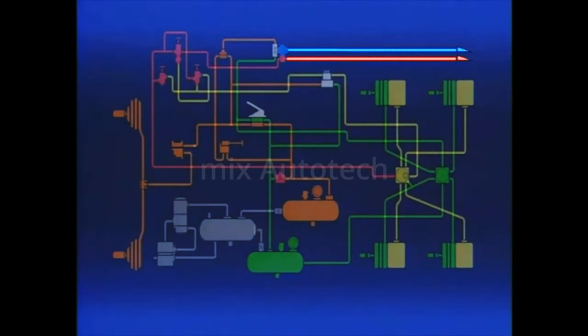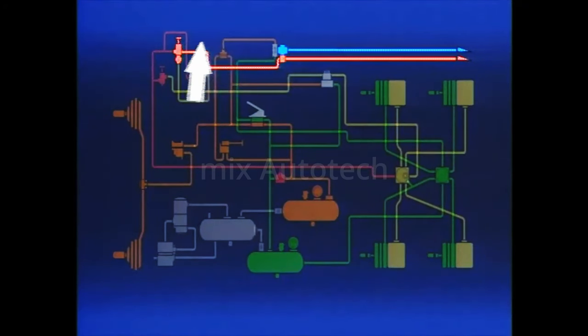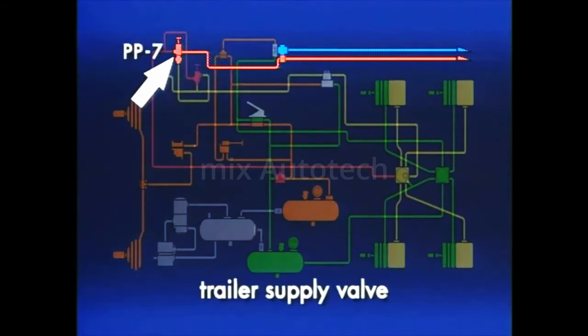The opening and closing of these two lines during normal and emergency operation is controlled by the Tractor Protection System, which is composed of two valves. There are a number of different valves that can be used. In this program, we'll look at the most basic and popular, the TP3 Tractor Protection Valve and a control called the PP7 Trailer Supply Valve.